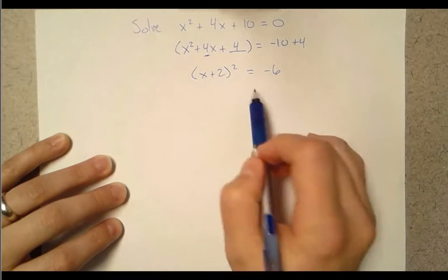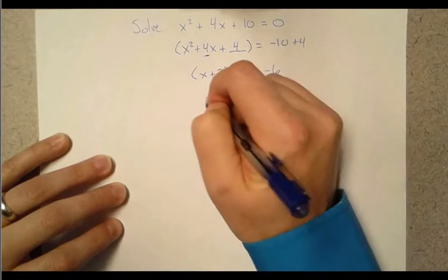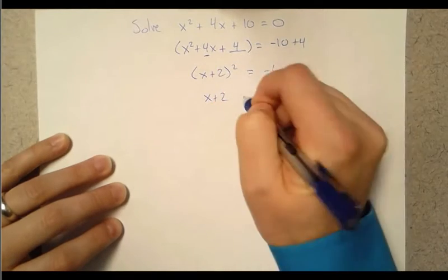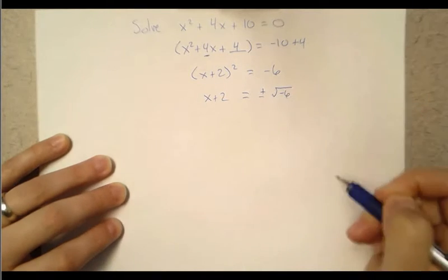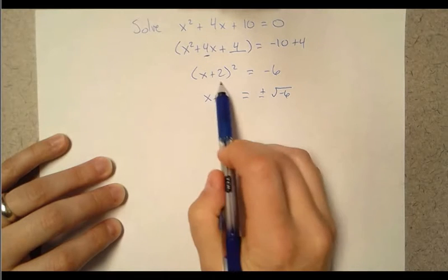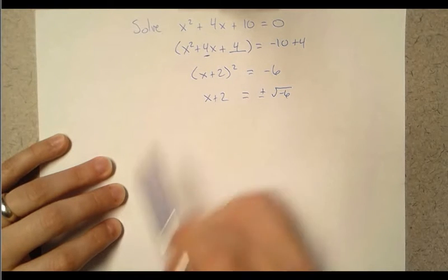Now the power of this is we can take the square root of both sides. So if I square root both sides I now get plus or minus square root of negative 6. Of course square root of this just makes our square go away.